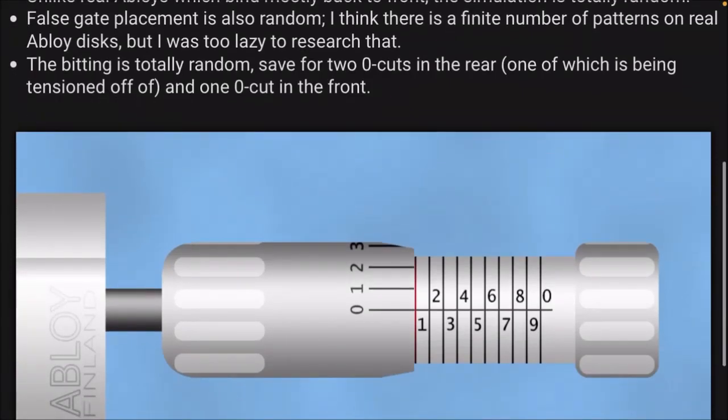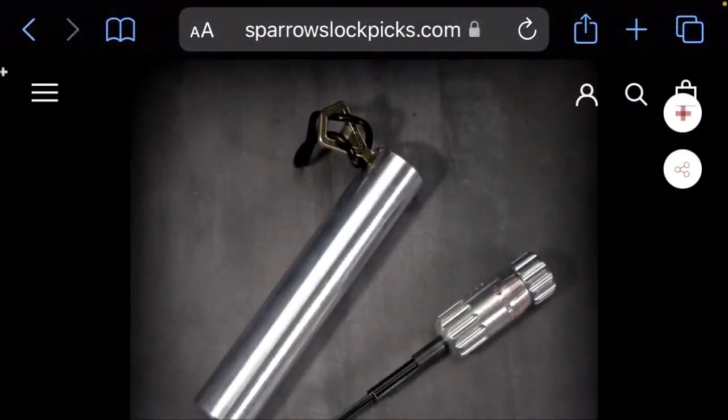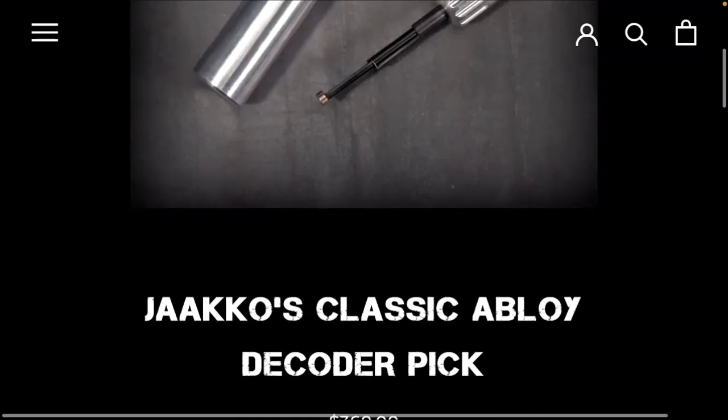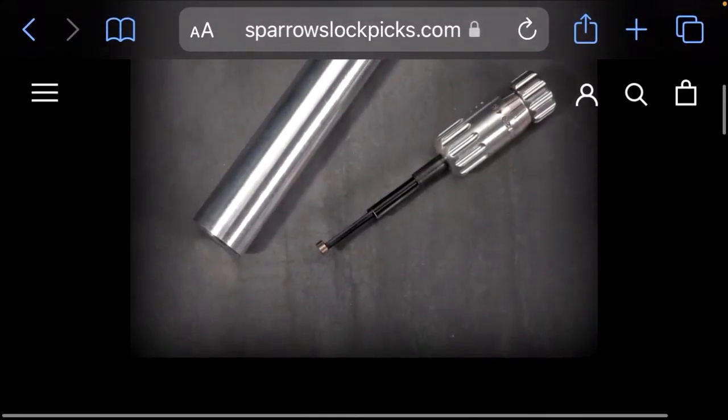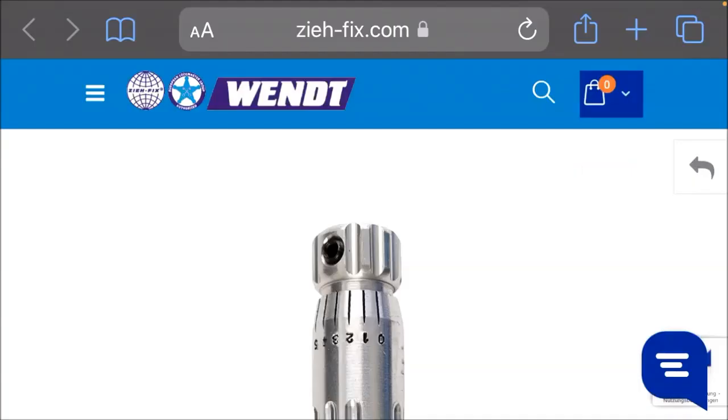So the tool in the simulator here is based on a Jako Classic pick, which is available. You can buy this from a few places, like Sparrows has one. It is very expensive, but it is also extremely well-made and does its job perfectly, so I guess by all argument it is worth the money. Wendt also sells it, which I think they're based in Germany.